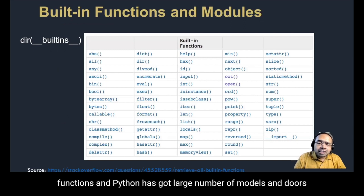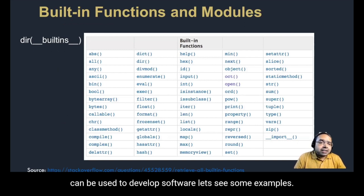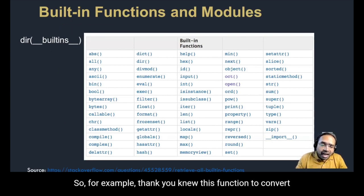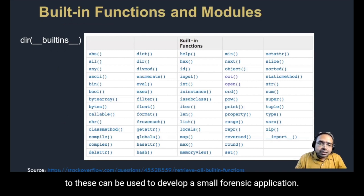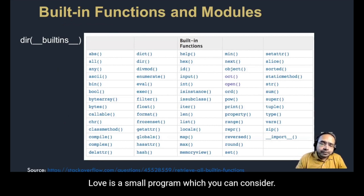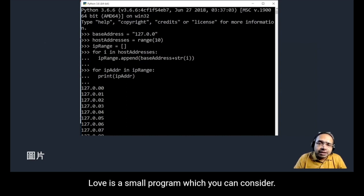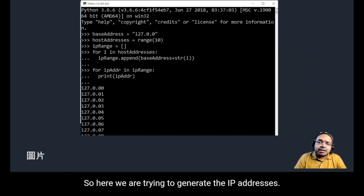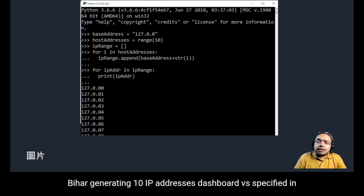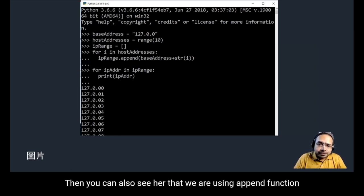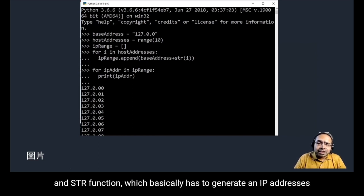Python has a large number of built-in functions and modules that can be used to develop forensic software. For example, the hash function can be used to compute a hash value, and random and sorted functions can be used to develop small forensic applications. Here is a small program that generates IP addresses — these are local loopback addresses. We generate 10 IP addresses using the range function, with the append and str functions helping to generate them.